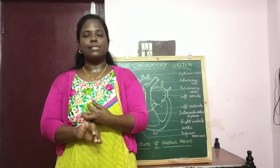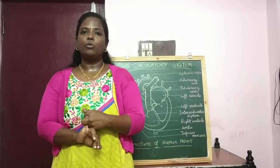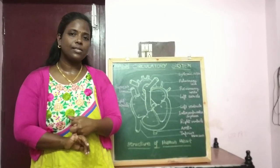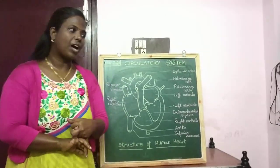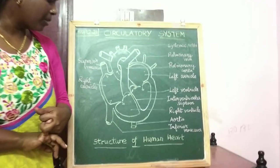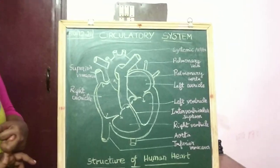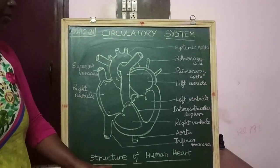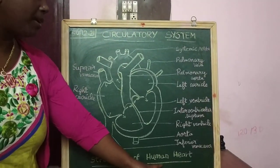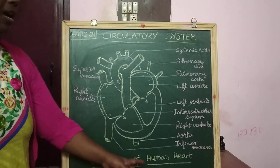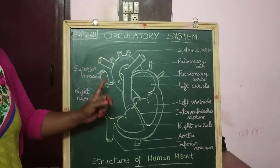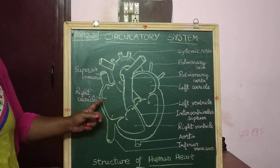First, let us learn about the heart. Here is the structure of the heart — are you able to see it on the board? This is the structure of the human heart. Our human heart is a four-chambered heart.